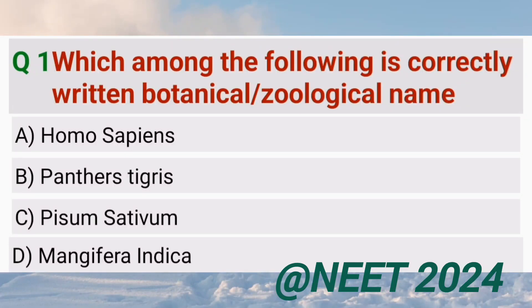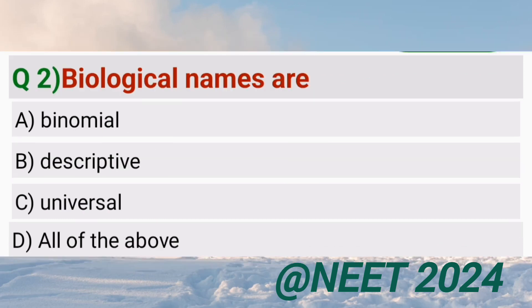Which among the following is correctly written botanical or zoological name? Panthera tigris — biological names are all of the above.